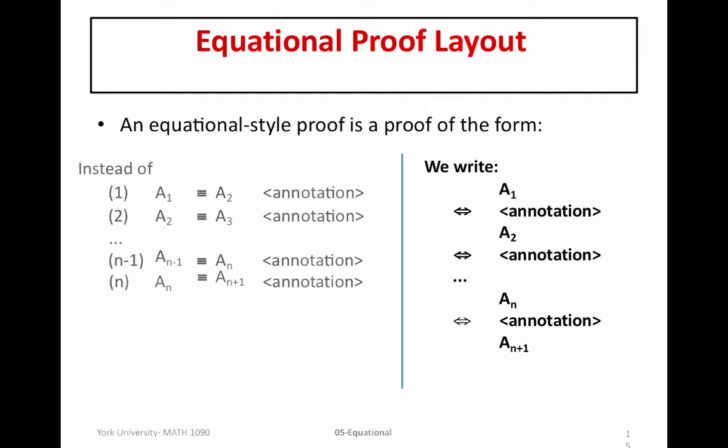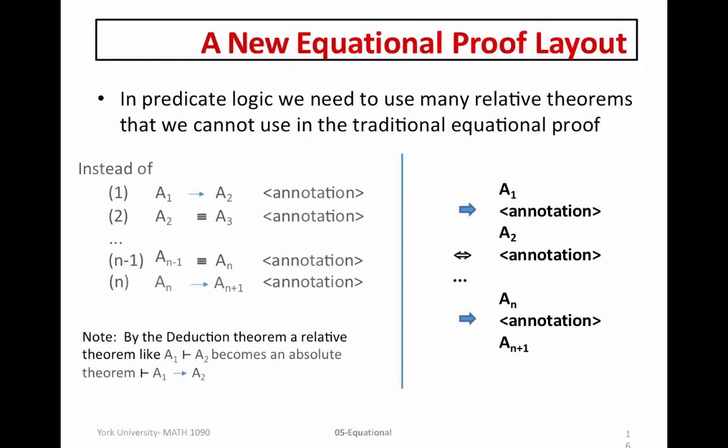But as you may notice in the new tools that we have added to help us prove theorems in predicate logic, by removing and inserting the universal quantifier and the different forms of substitution that we are going to use, some of these results are relative theorems. We already know that we can't use any relative theorems in an equational style proof because they don't establish an equivalence. They require hypotheses, and the hypothesis implies something else. So we want to actually adjust our equational style proof to allow for those implications or to use those relative theorems.